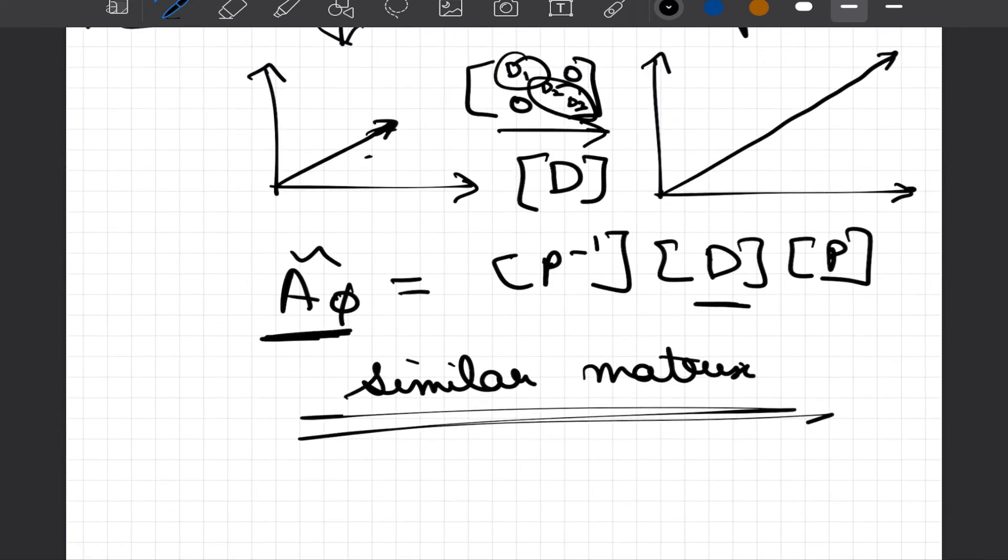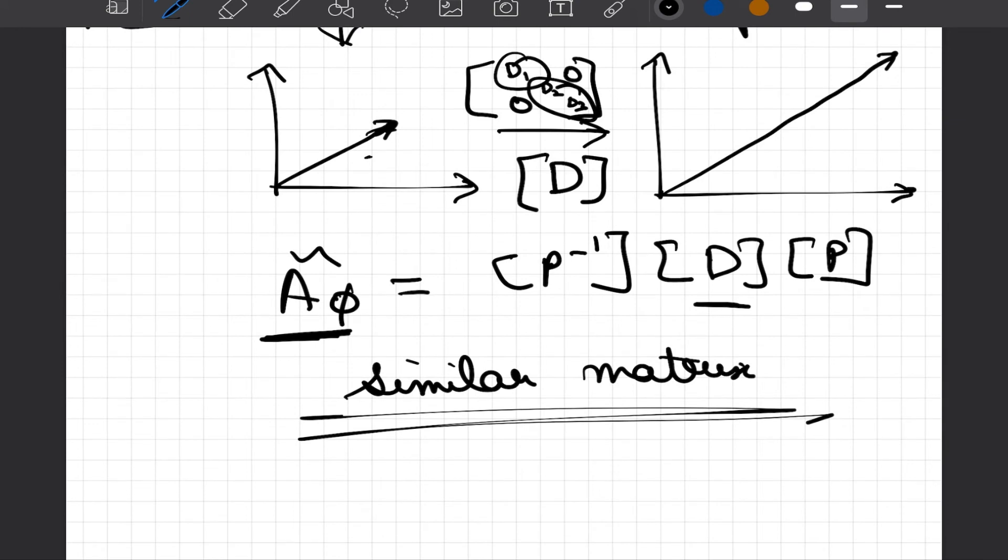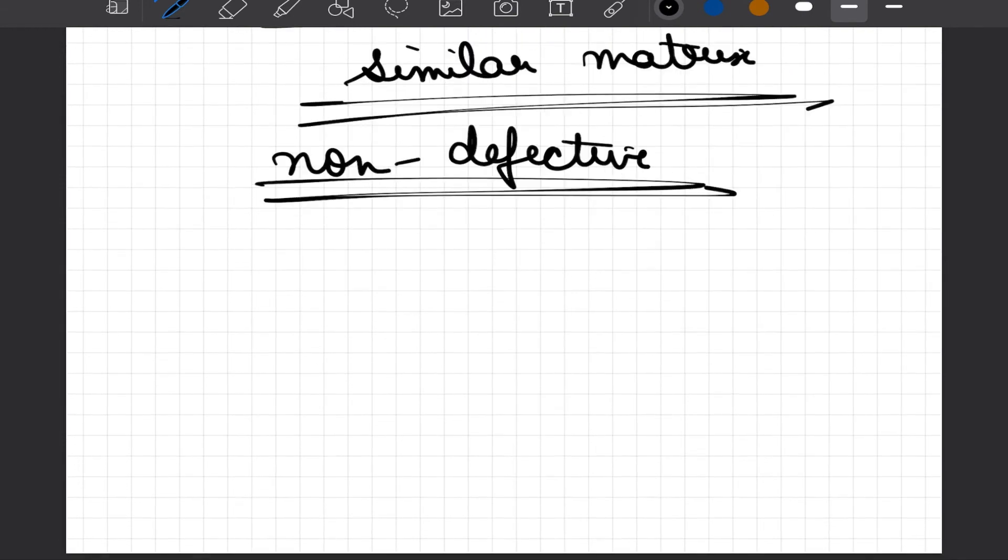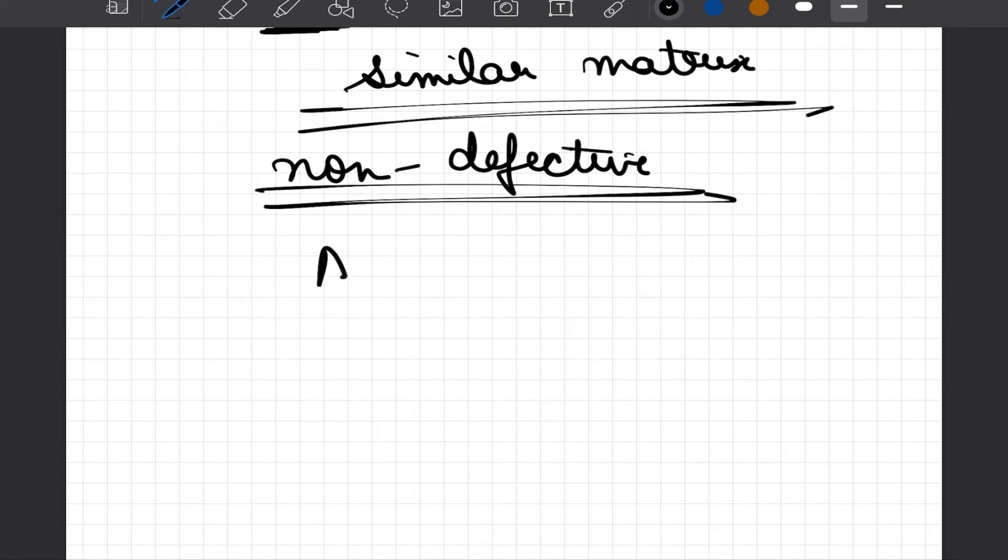When we are talking about diagonalizable matrices, we are saying that a matrix can be diagonalized if and only if it is non-defective. That would mean that if it is of size n cross n, we should have n independent vectors.